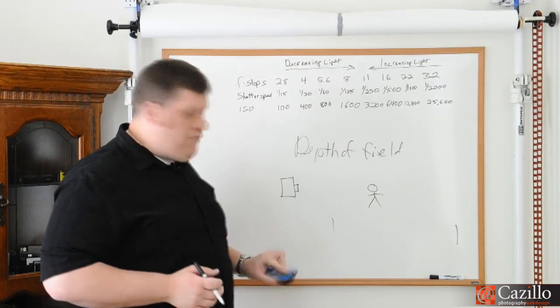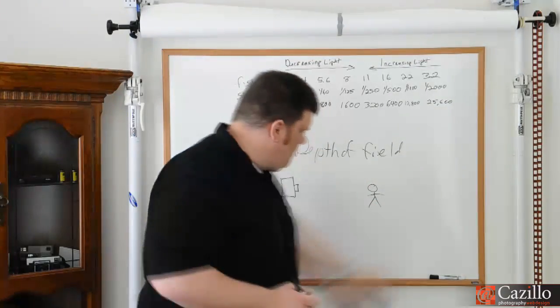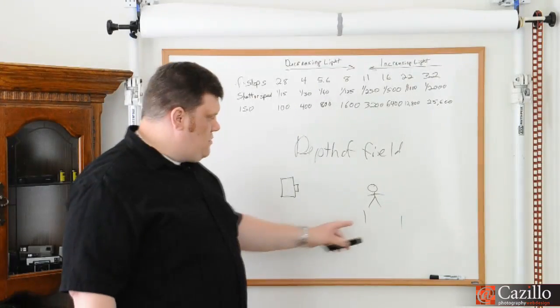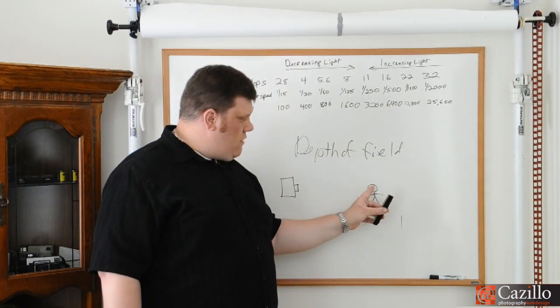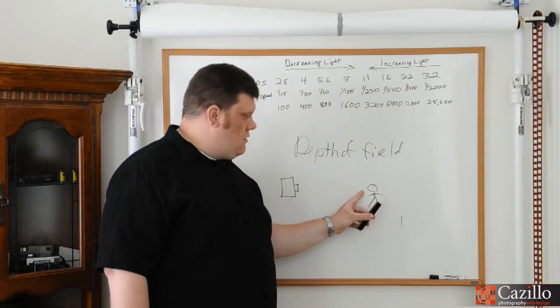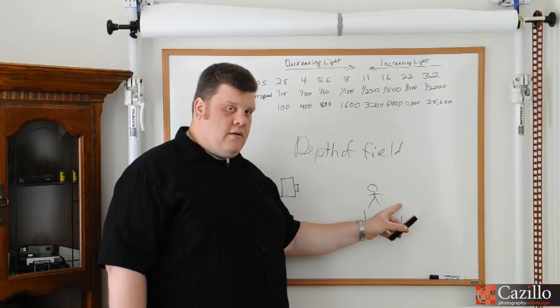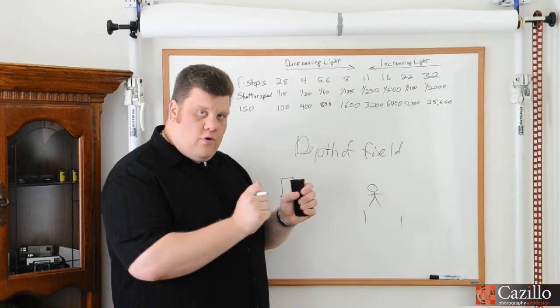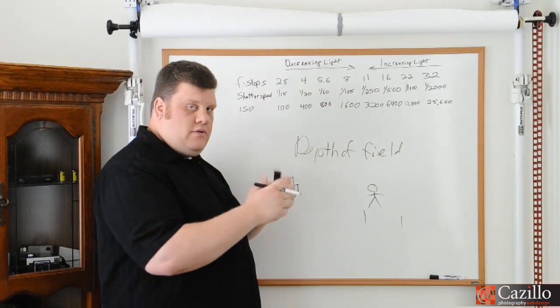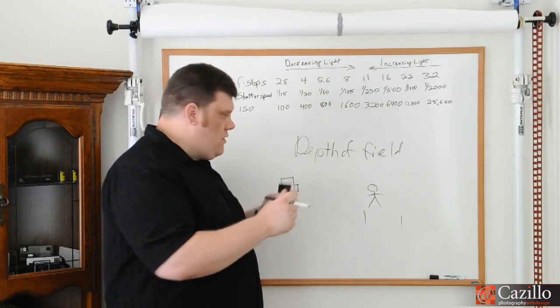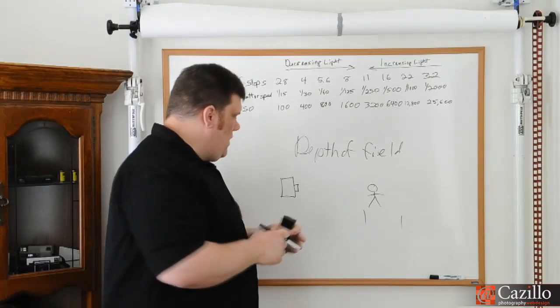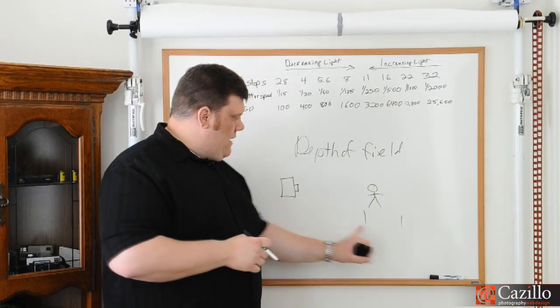But if I'm shooting at, say, f-4, my depth of field might only be from there to there, okay? What happens with focus is if you're focused right on the subject, one-third of your focus is in front, and two-thirds are in the back. Now what happens is when you're rotating your camera, what's called the plane of focus is actually parallel to the camera. So as you turn the camera, your plane of focus is also going to change. So that's where we get our depth of field.